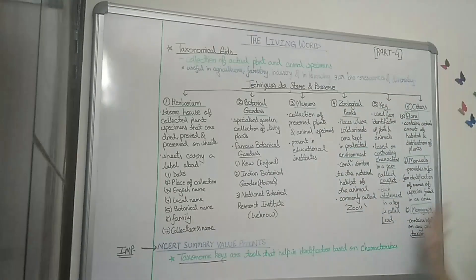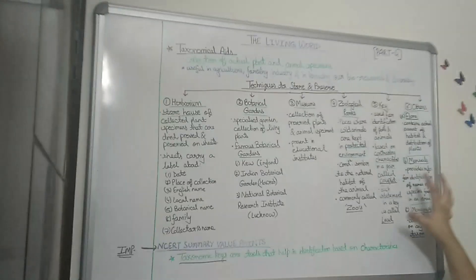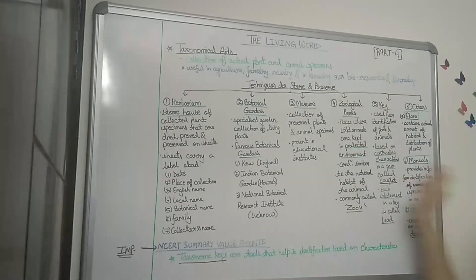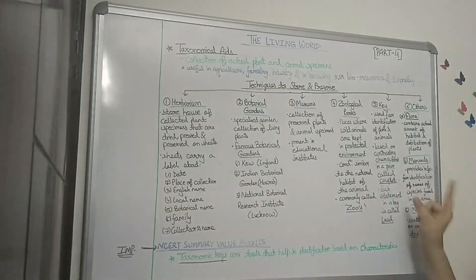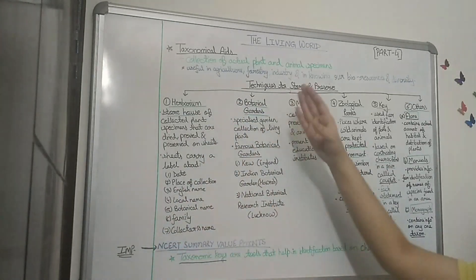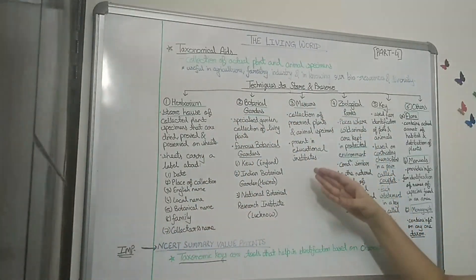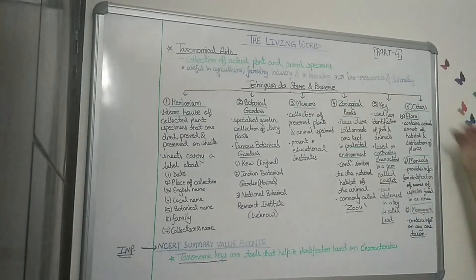I have classified the techniques to store and preserve specimens into six categories to make it easy to understand. There are six techniques by which we can store and preserve plant and animal specimens: herbarium, botanical gardens, museums, zoological parks, key, and certain others which we will be coming to.